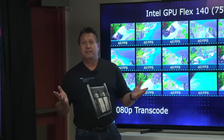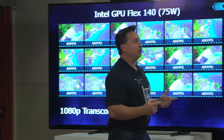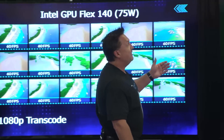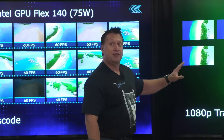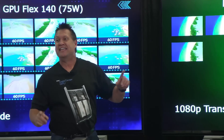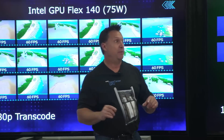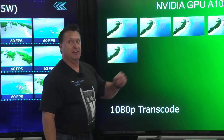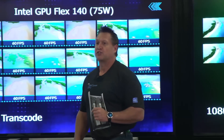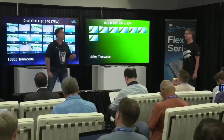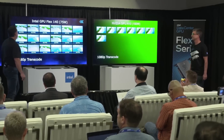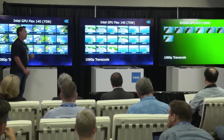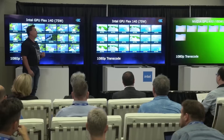You might wonder what the competition looks like. Over here on the NVIDIA A10 — this is a 150-watt card, double the power — we have seven streams being transcoded at 60 frames per second, versus 36 on the 75-watt card. So you get a lot more density and can deliver to a lot more consumers.